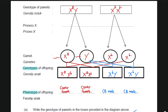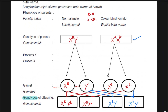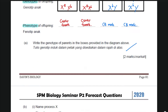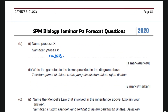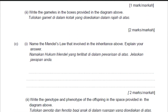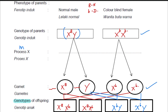So we've done: writing the genotype for the parents, naming process X — which is the process of forming gametes, forming sperm and ovum, whereby the genetic content becomes half. This process is actually meiosis. Write the gametes in the boxes provided in the diagram — we've done that. Name the Mendel's law involved in the inheritance. Whenever you see only one pair of alleles, that is Mendel's first law.